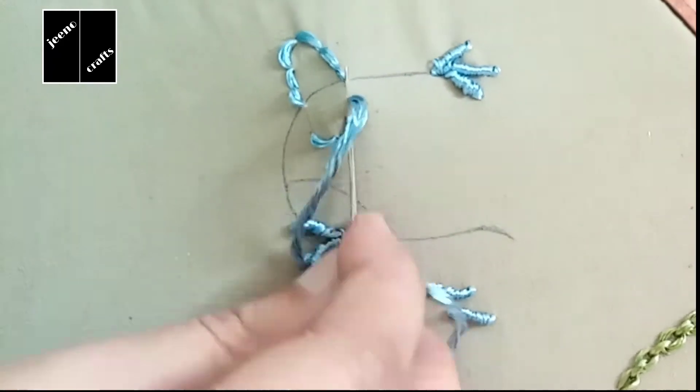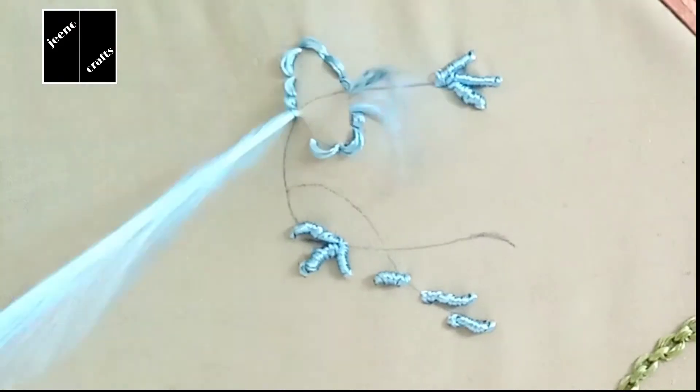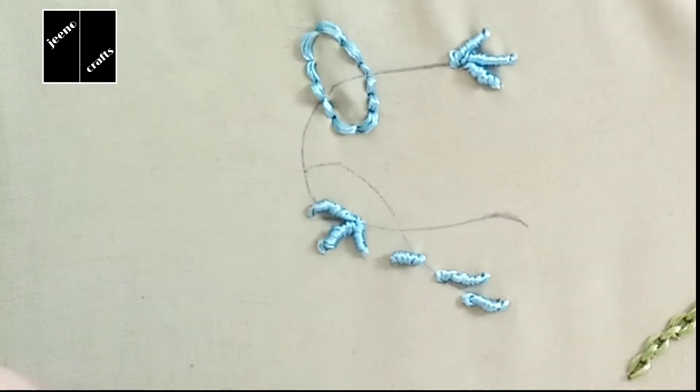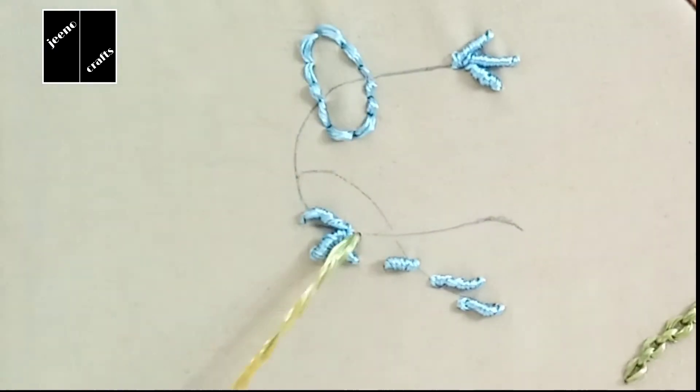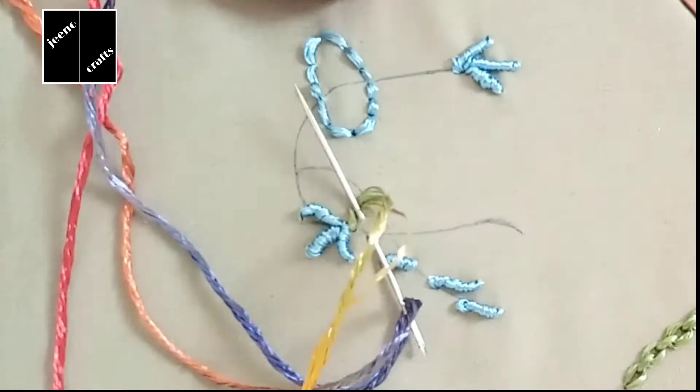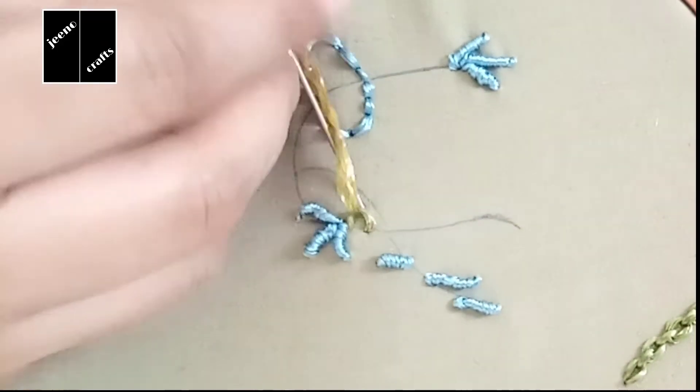What I'm going to do now: first of all, I will start from bullion knot. It will be easier because in this way you can quickly finish one side.